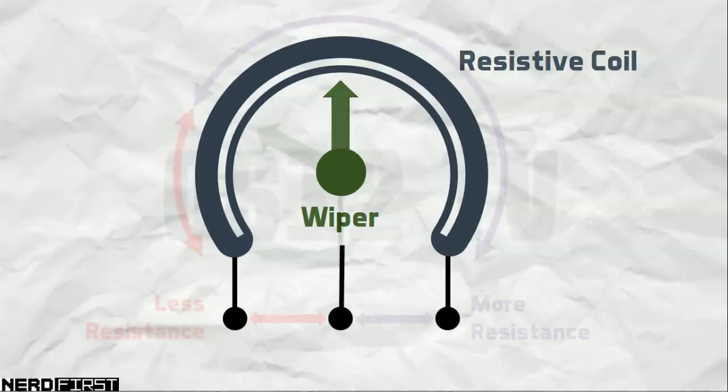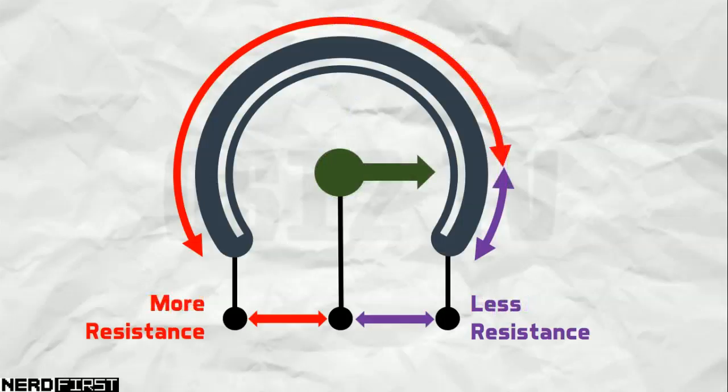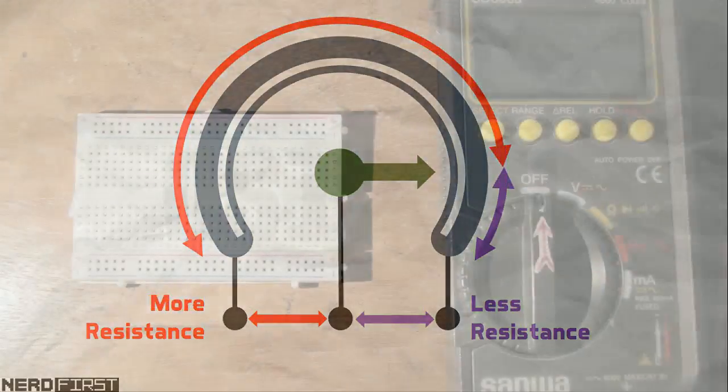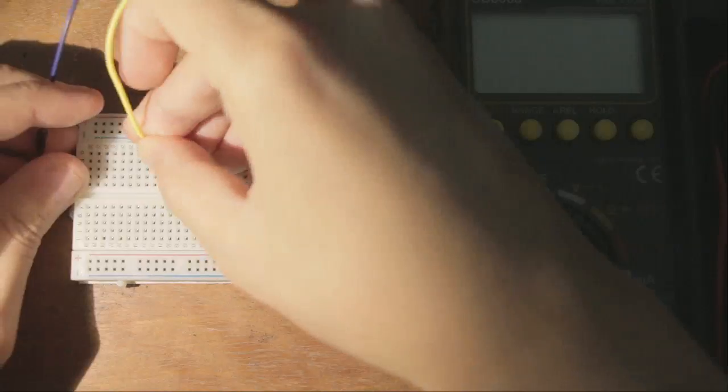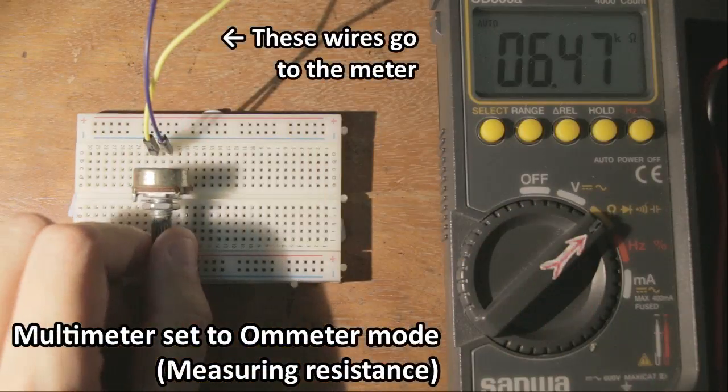Rotating the knob on the potentiometer allows you to adjust this point of contact. The resistance between the wiper and each end of the resistive wire changes as the knob is rotated. The further current has to flow across the wire, the more resistance it encounters.